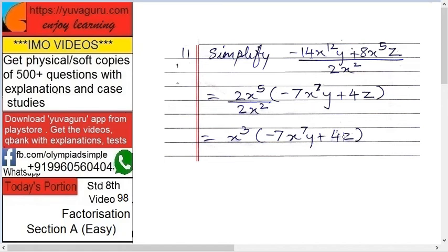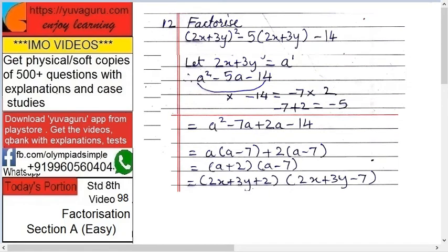Next, factorize: (2x + 3y) squared minus 5 times (2x + 3y) minus 14. To make it easier, let 2x + 3y equal to a. The expression becomes a squared minus 5a minus 14. We apply the same logic: find two numbers whose product equals the first times last term, and which add up to the middle number.